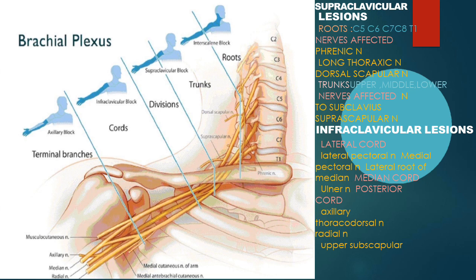Clinically, we divide brachial plexopathy into supraclavicular lesions and infraclavicular lesions. Supraclavicular plexopathies involve the roots and trunks, including the phrenic nerve roots, long thoracic nerve, dorsal scapular nerve, and the upper, middle, and lower trunks, as well as nerves from the trunk like the nerve to subclavius and suprascapular nerve.